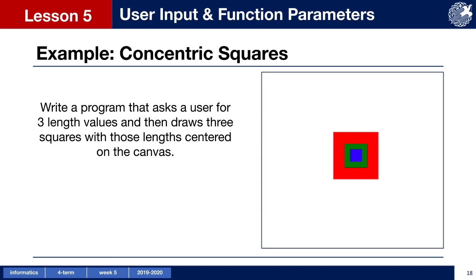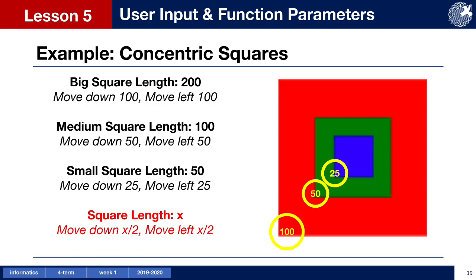In the next example we want to ask the user for three colors and three length values, then draw three squares centered on the canvas. Because we won't know the length values in advance, we need code that works for any values entered. Let's plan before coding. For the biggest square, length is 200 and we move down and left 100 to reach the bottom-left corner. For the medium square, length is 100 and we move 50 pixels down and left. For the smallest, length is 50 and we move 25 pixels. So no matter what the length is, we move the turtle down and left by half the length to reach the bottom-left corner, and before drawing each next square we return the turtle to the center.